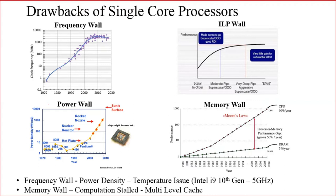This was one of the important motivations behind the development of a multi-core processor, because more and more high-performance applications were emerging and a single-core processor was not able to handle that processing. In order to overcome the drawbacks of a single-core processor, multi-core processors were developed. The first drawback is known as the frequency wall.